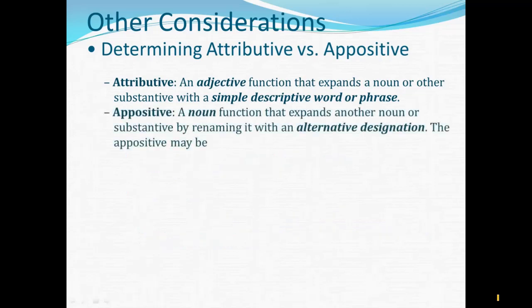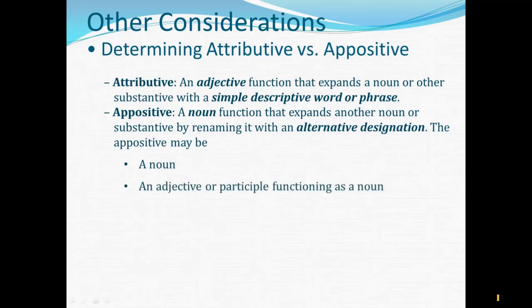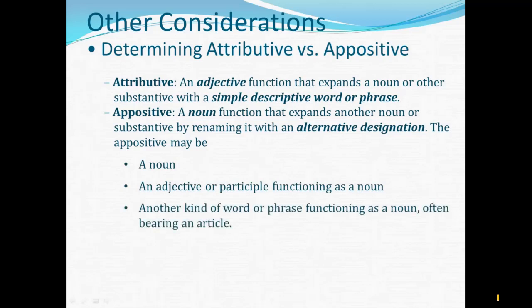The appositive, though, is a noun function that expands another noun or substantive. Unlike an adjective, which supplies description, an appositive expands the noun differently — by renaming it with an alternative designation. The appositive may be a noun, or an adjective or participle functioning as a noun, or another kind of word or phrase functioning as a noun, often bearing an article. The key thing is that the appositive gives us an alternative way to name the head noun it renames. By the nature of the case, the appositive will always follow the word that it renames, whereas an attributive adjective may be placed before or after the word it modifies.